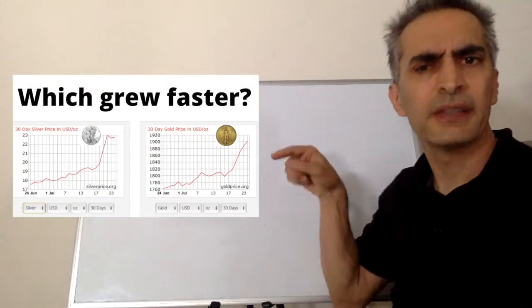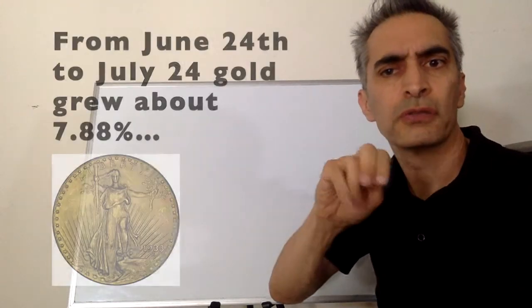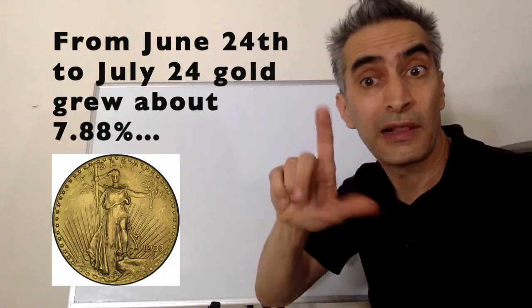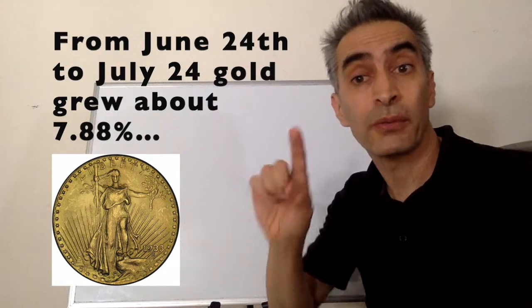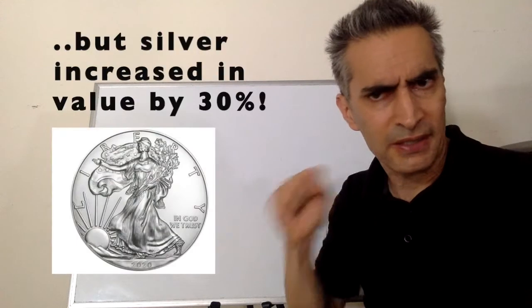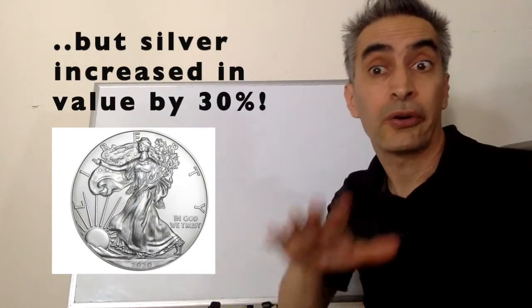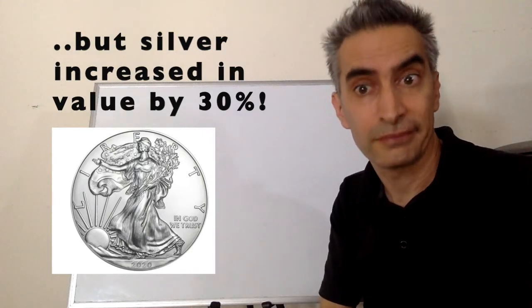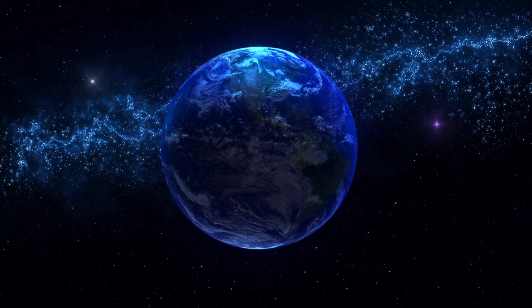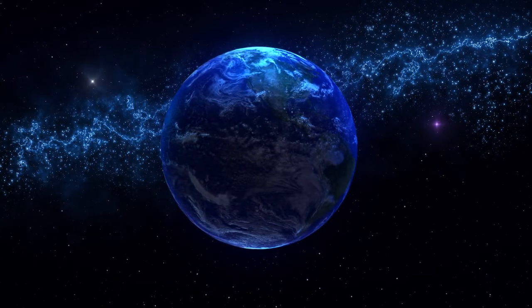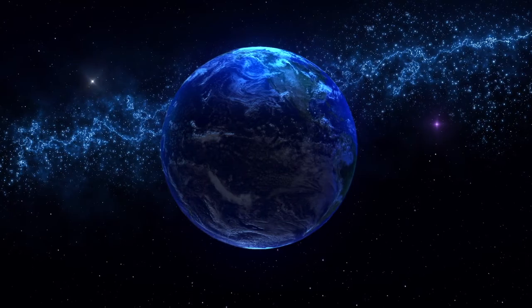In this example, from June 24th to July 24th, gold grew about 7.88%, while silver increased about 30%. I hope you enjoyed this video. Now watch more math videos. We'll see you next time.